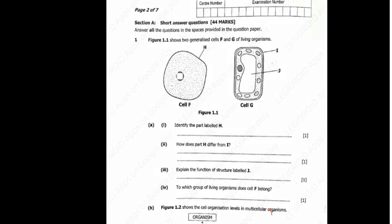In this video we're going to be doing a Grade 12 Biology past paper for 2022. We're going to start with question one. Question one says figure 1.1 shows two generalized cells F and G of living organisms. Question 1a1 says identify the part labeled H.